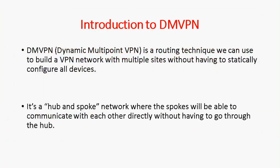DMVPN is a routing technique we can use to build a VPN network with multiple sites without having to statically configure all the devices. Using DMVPN, when spoke one wants to form a tunnel to spoke two, it dynamically forms the tunnel. It's a hub and spoke network where spokes are able to communicate to another spoke directly without sending traffic to the hub.